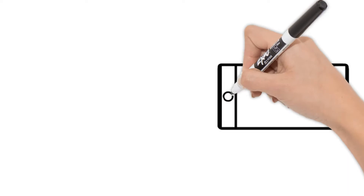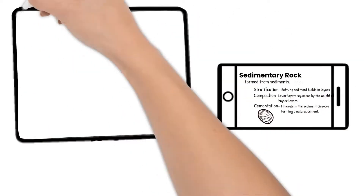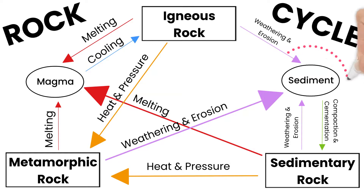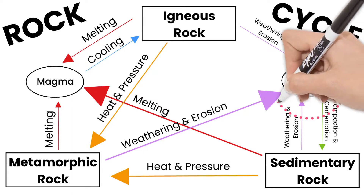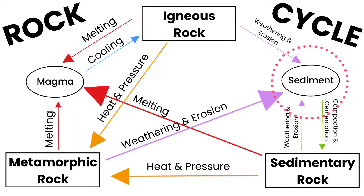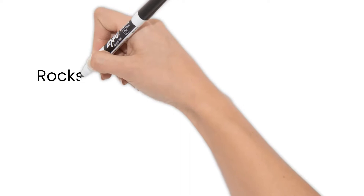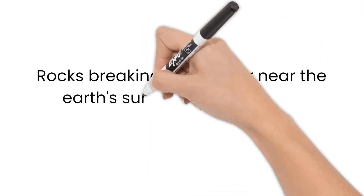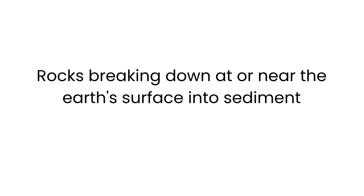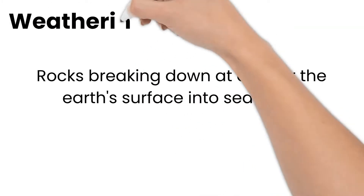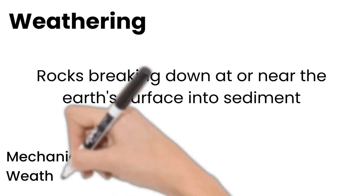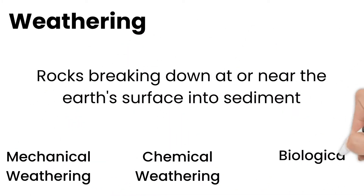In the videos about rocks and the rock cycle, we discussed that rocks can be formed from sediment, as well as break apart to form sediment. The process of rocks breaking down at or near the surface of the earth into sediment is called weathering. There are three types of weathering: mechanical, chemical, and biological.